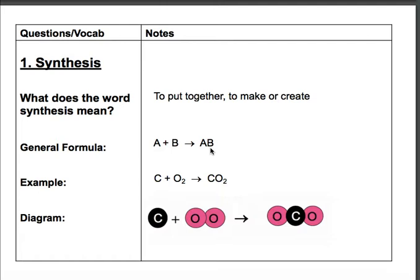In this case, the general formula for synthesis would be A plus B yields AB. So you can see that you have two things here that produce a single product. Don't be fooled. You can actually have more than two reactants. Most cases, you will not, but there are situations where you'll have more than two. So it might be like A plus B plus C yields ABC, but same principle.